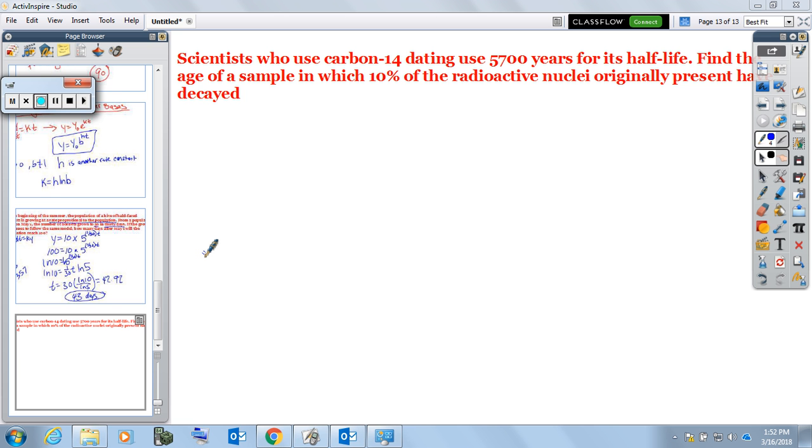So we're going to model it in this case as A equals A₀ times one-half to the t over 5,700 power. Let's take it a little bit step further, though.